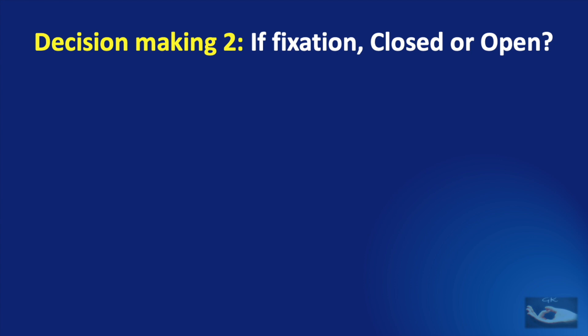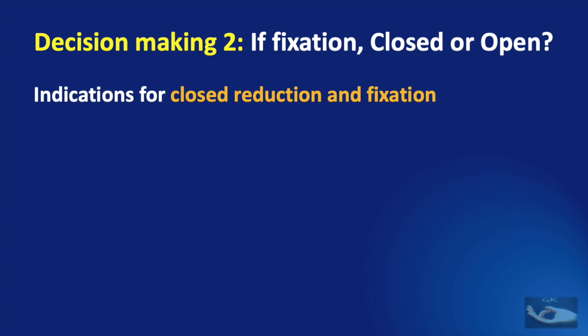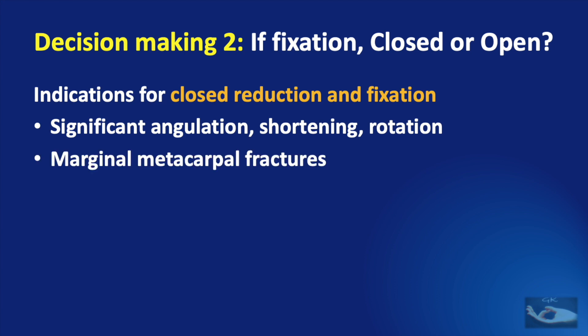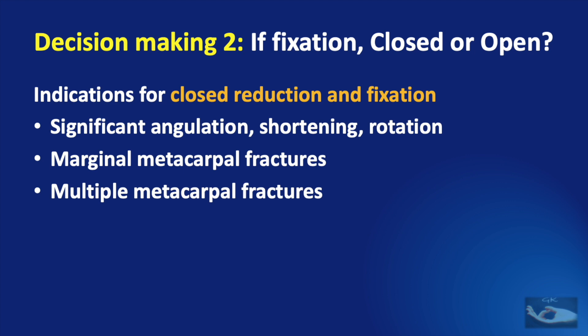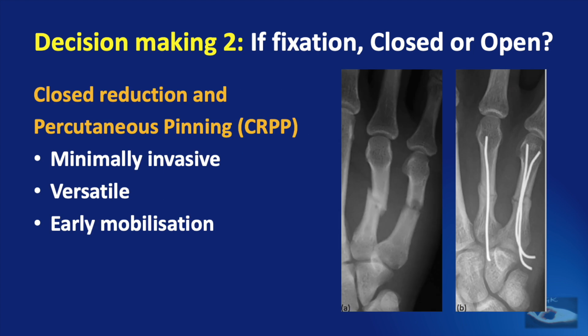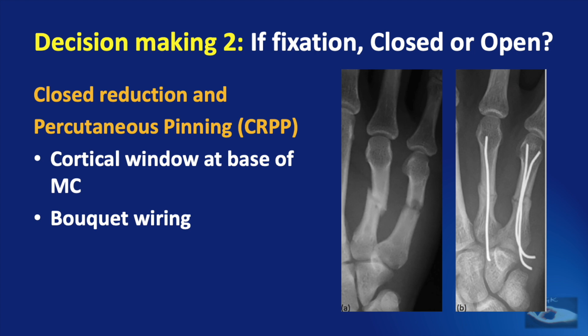For fixation, should we do the closed method or the open method? The indications for closed reduction and fixation are significant angulation, shortening or rotation, involvement of marginal metacarpal fractures, multiple metacarpal fractures, and reducible but unstable fractures. Once closed reduction is done, percutaneous pinning can be done using pre-bent K-wires — this will be minimally invasive, versatile, and allows early mobilization. This can also be done by a cortical window made at the base of the metacarpal and using 3 or 4 pre-bent, approximately 30-degree, 0.9 mm pins inserted and buried within the medullary canal. This is called the bokeh wiring.